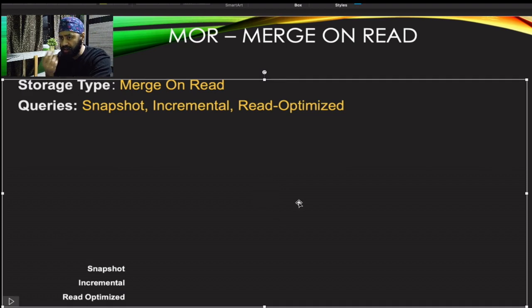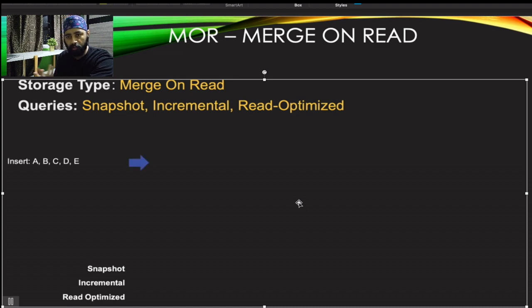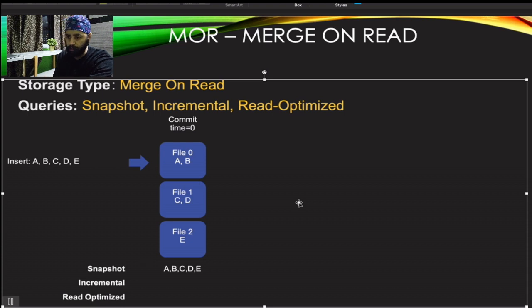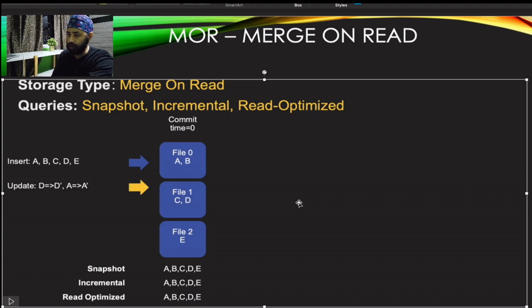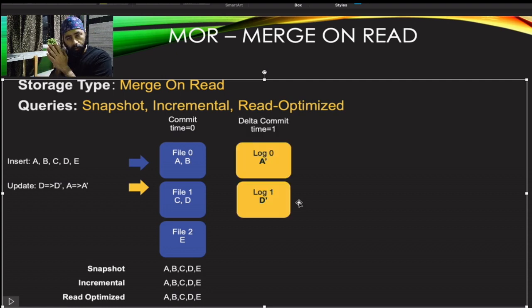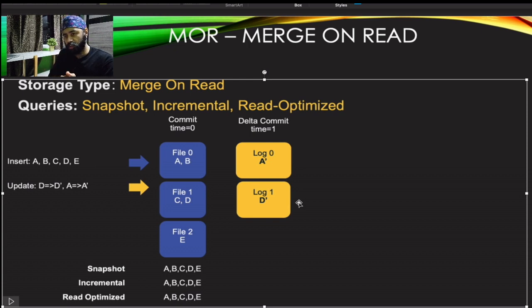Now let's look at Merge on Read. In this mode, there are three types of queries: snapshot, incremental, and read-optimized. Taking the same insert example — five records A, B, C, D, E stored in three files — snapshot, incremental, and read-optimized queries all return the same thing initially. When an update happens — D to D-dash and A to A-dash — instead of creating new files, Merge on Read creates a log file tracking what changed: A to A-dash and D to D-dash. The original data files are not modified.